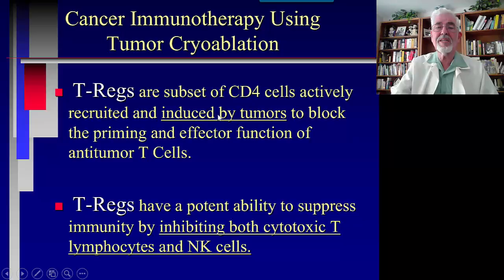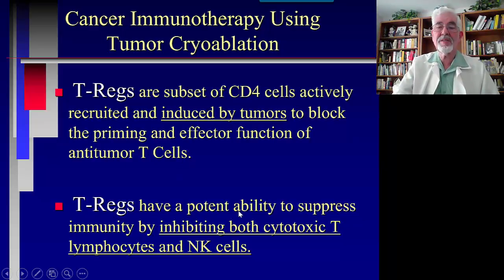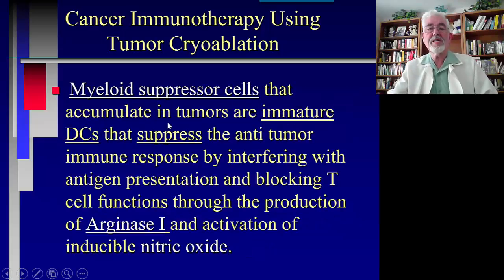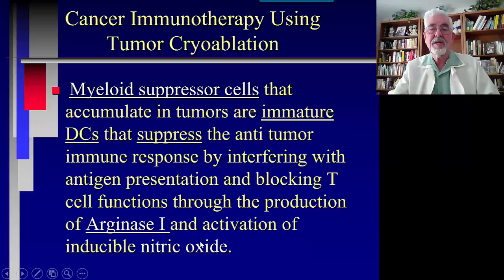The Tregs are influenced by the tumor. That's how the body doesn't recognize the tumor — the Tregs are told by the tumor to be active and to block the priming effect of anti-tumor T cells. Tregs have a potent ability to suppress immunity by inhibiting cytotoxic T lymphocytes and natural killer cells. Suppressor cells that accumulate in tumors are immature dendritic cells that suppress the anti-tumor immune response by interfering with antigen presentation.